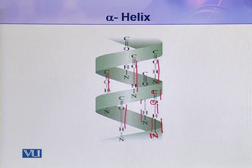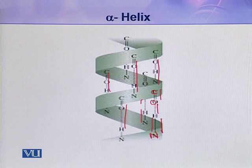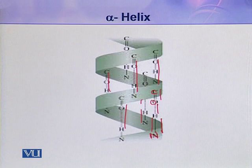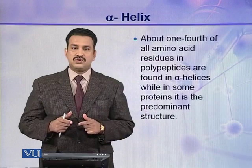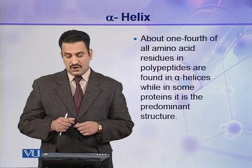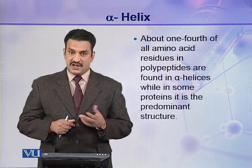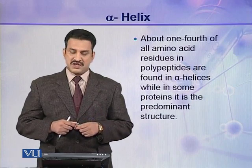This helix uses the full potential of hydrogen bonding of the amino acids. Normally, one amino acid makes a hydrogen bond with the fourth amino acid next to it — so the first amino acid makes a hydrogen bond with the fourth, the second with the fifth, and so on. All the amino acids are hydrogen bonded and this structure becomes very stable. About one fourth of all amino acid residues in a polypeptide chain are found in alpha helices, and in some proteins like keratins, the alpha helix is the prominent structure.